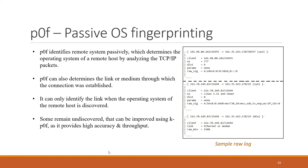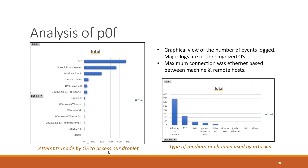In the next event, p0f was able to find the operating system and further moved to identify the link used to establish the connection. Some undiscovered events can be improved using kp0f, which is implemented in Linux and known as kernel p0f, as it provides high accuracy and throughput. In the analysis, the OS most detected was Linux and the medium used was Ethernet or modem.